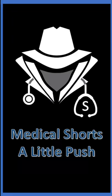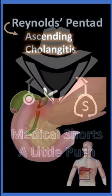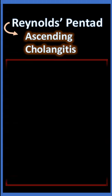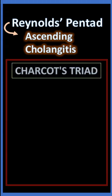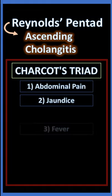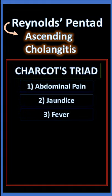Salam, welcome to another medical short. In this video we will talk about Reynolds' Pentad as a feature of severe ascending cholangitis. Reynolds' Pentad consists of Charcot's Triad — abdominal pain, jaundice, and fever — plus